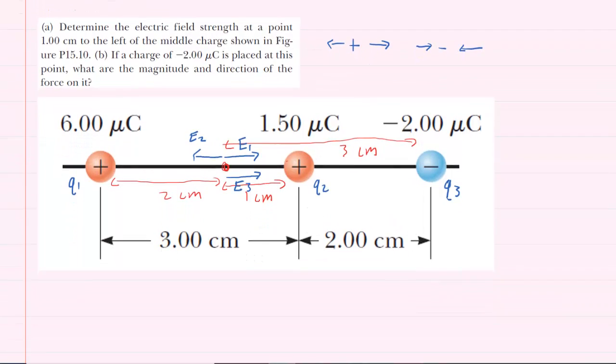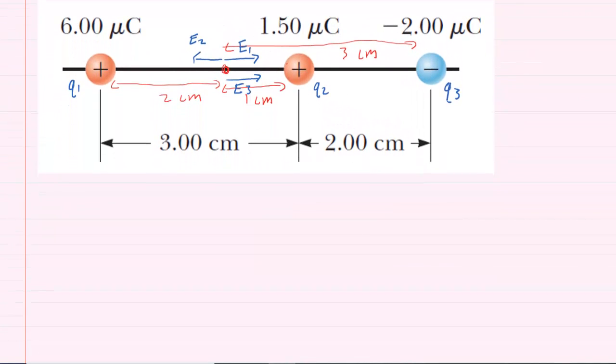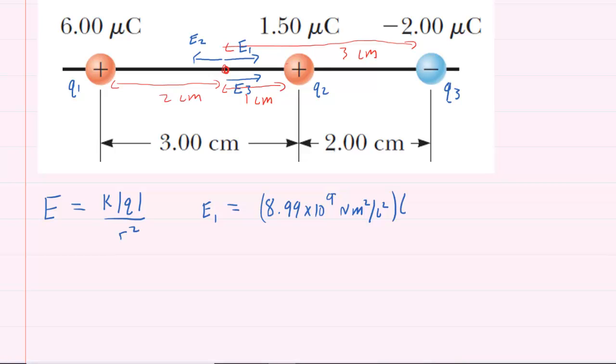Now we will turn to using the electric field equation for point charges. We know that that equation is equal to a constant k multiplied by the magnitude of the charge divided by the distance squared. So for example, for E1, we would plug in the constant k, which is 8.99 times 10 to the power of 9 newton meters squared per coulomb squared.